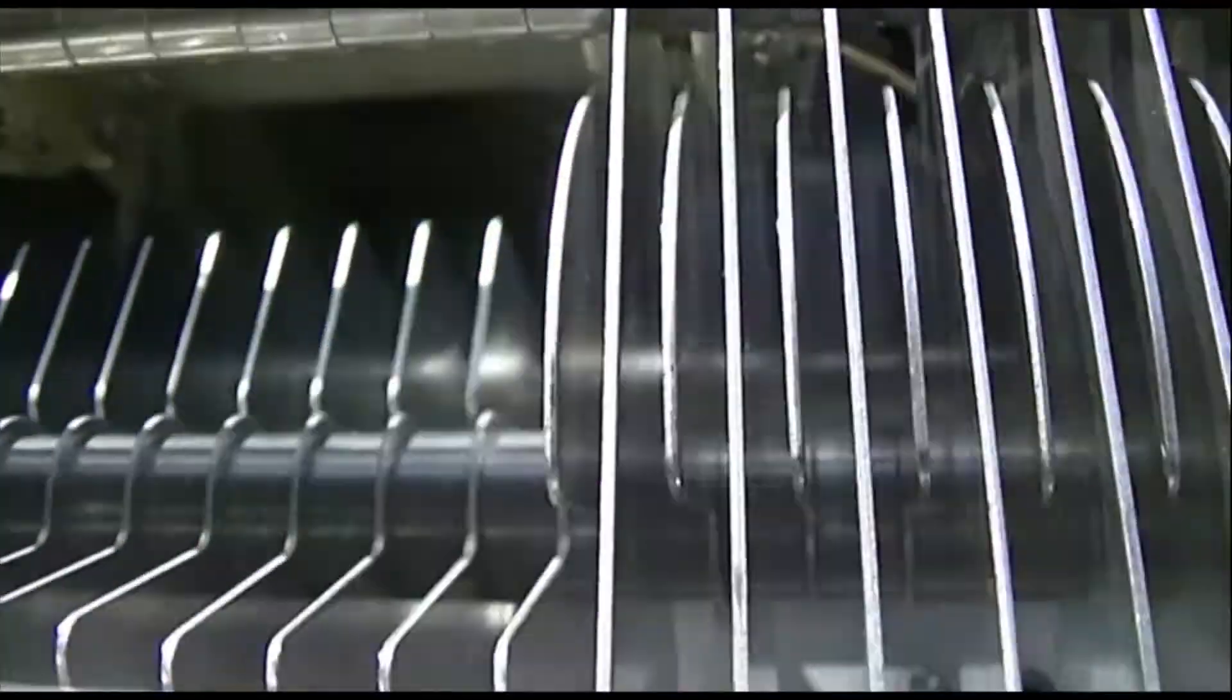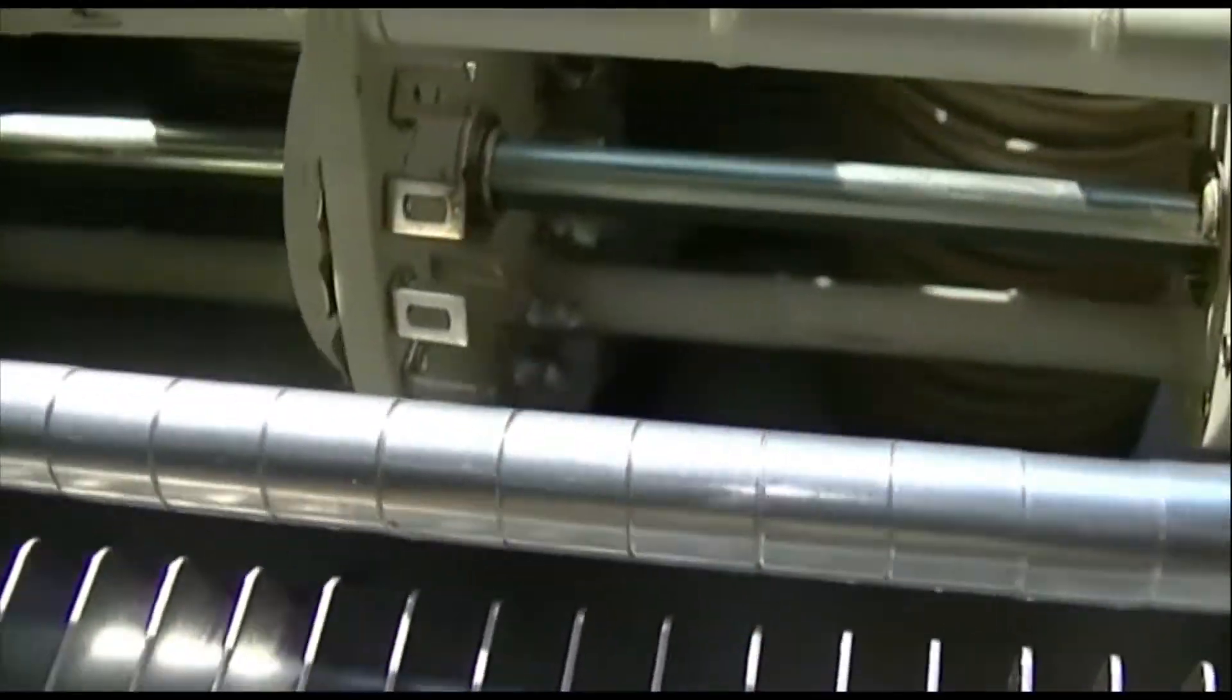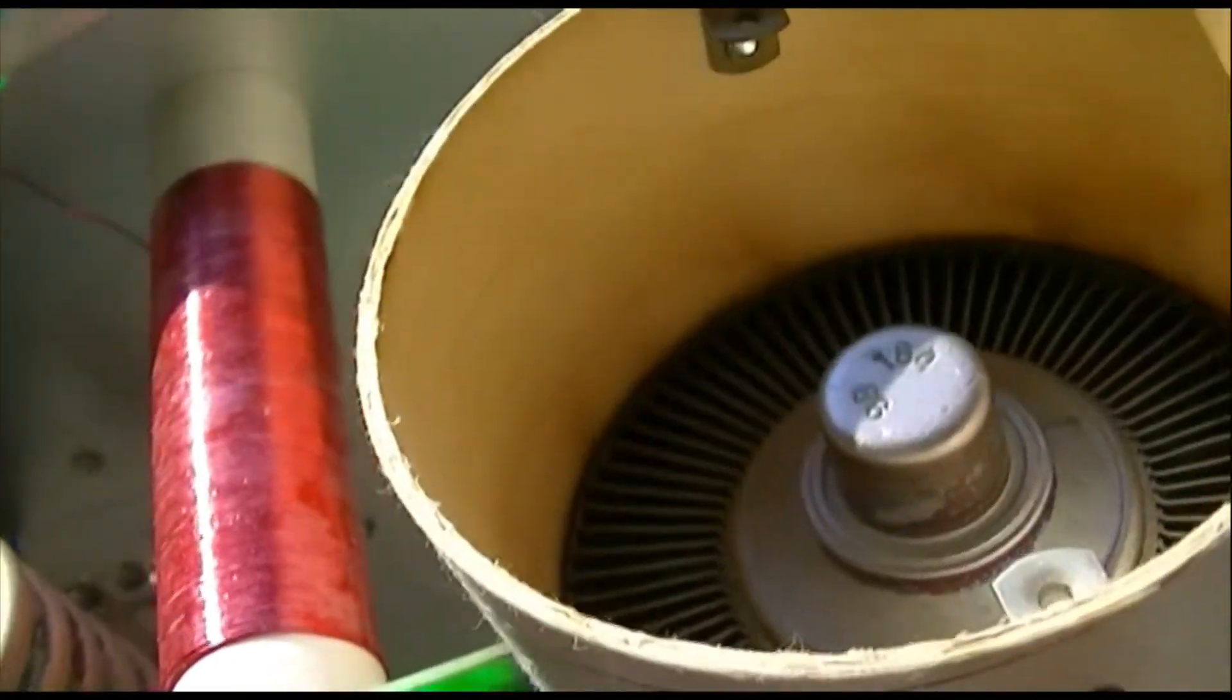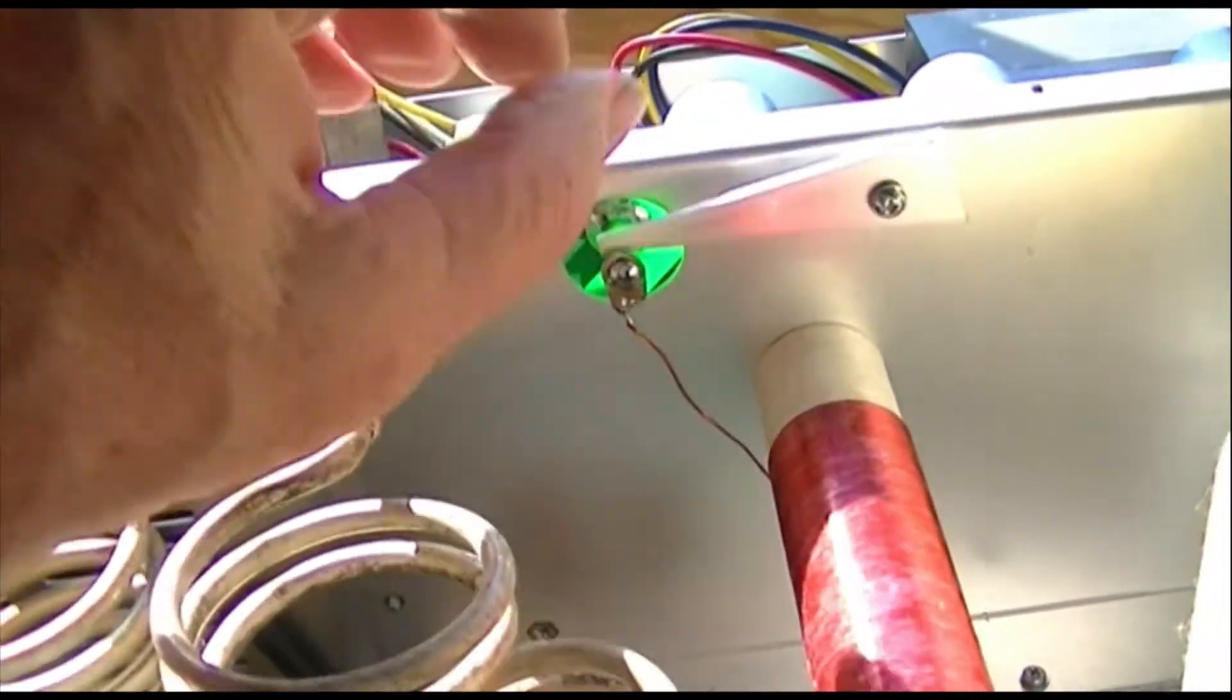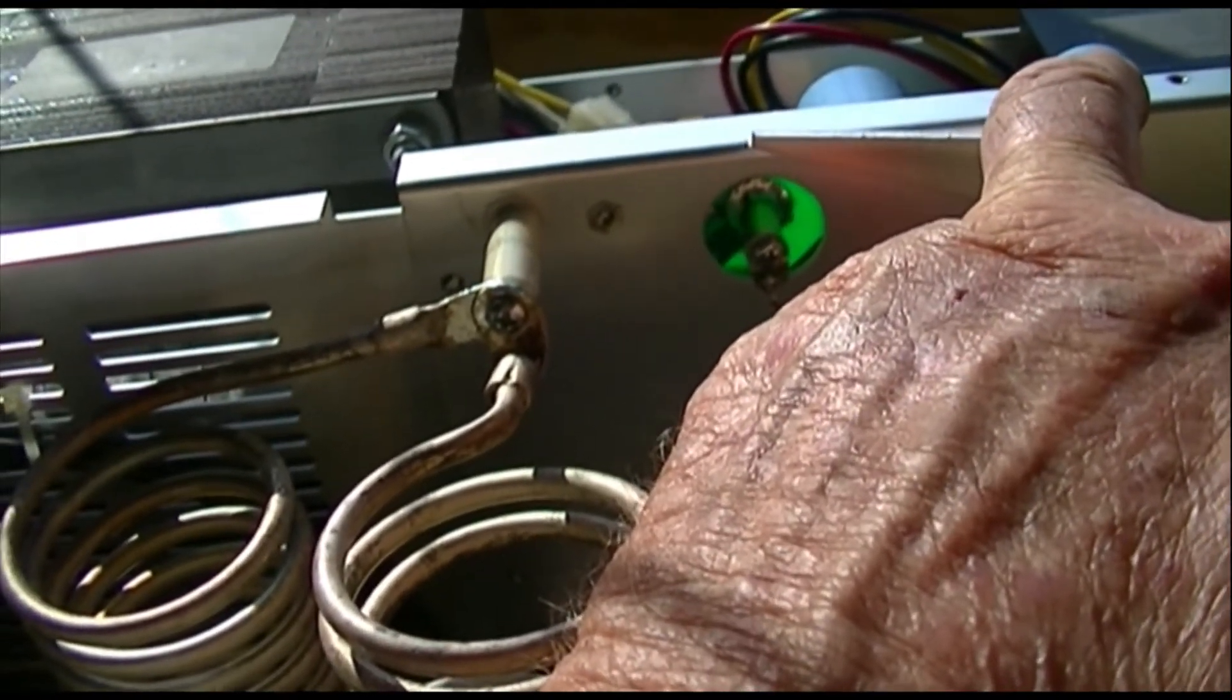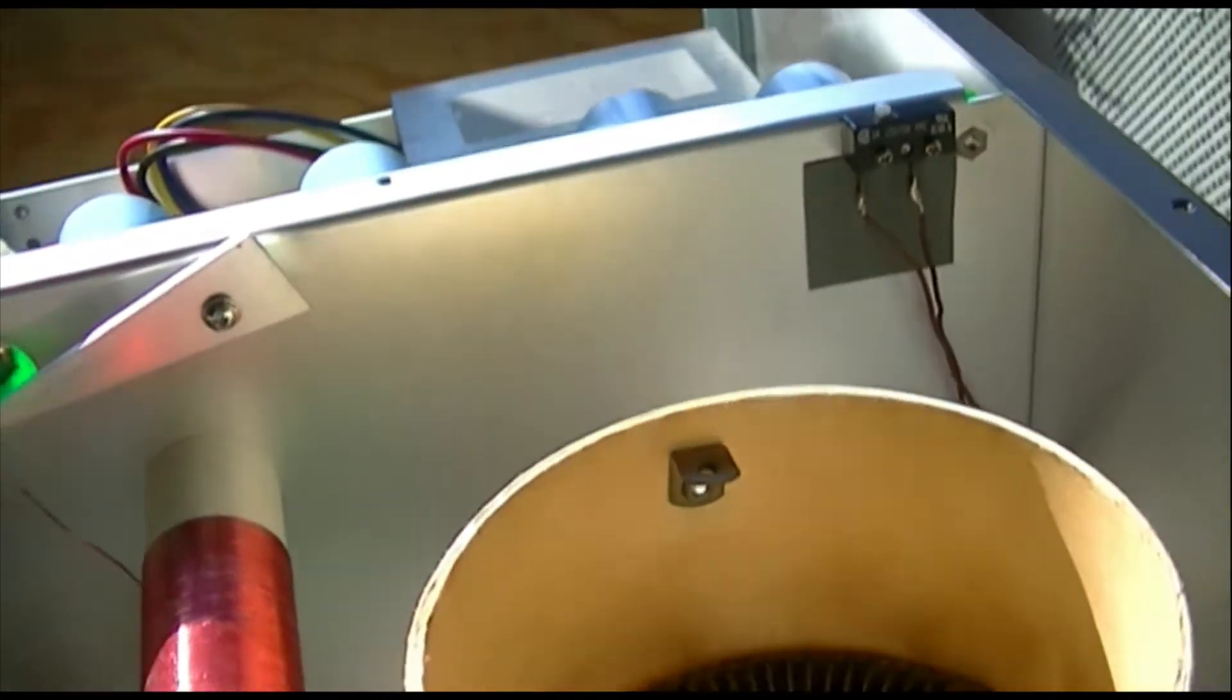Well, there's the plate tuning capacitor, band switch, tank coils, plate choke. And this has got double interlocks. The lid is on there, it holds this little crowbar off, but when the lid comes off, it shorts out the power supply B-plus. And here's a little microswitch for the primary, I'm sure.